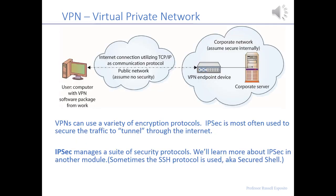This slide explains a bit more about how a VPN works. On the left-hand side is a user at home with VPN software on their machine — either pushed to them or given via thumb drive. It does the encryption, goes through the internet, and over to the right-hand side. Before hitting the corporate server, you'll go through firewalls and potentially through the DMZ, but you go to a VPN endpoint device, sometimes called a VPN concentrator, which does the decryption and allows you to communicate with the private trusted network behind the firewalls.